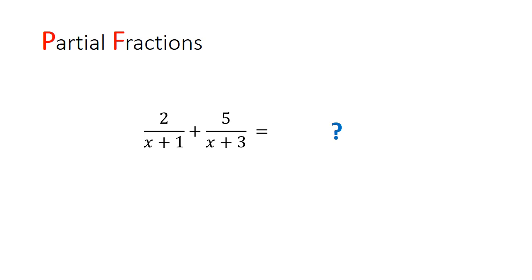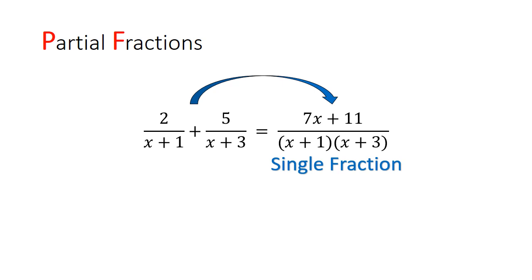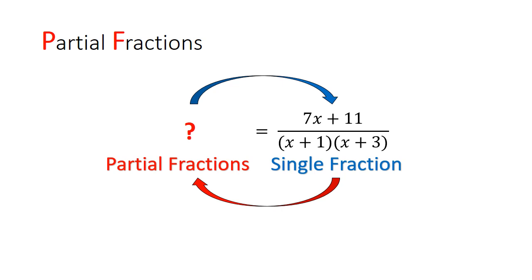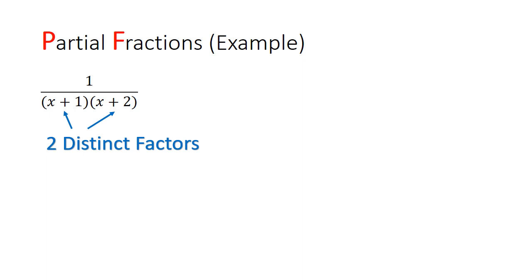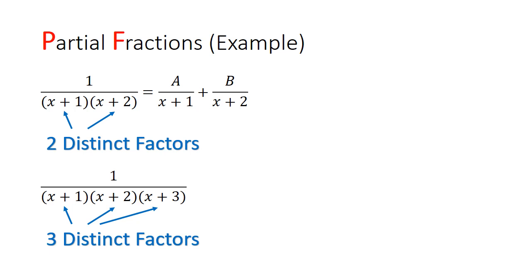Let's do a quick recap of partial fractions. Normally we start with two partial fractions and add them to get a single fraction. In partial fractions, we reverse this: given a single fraction, we ask what two partial fractions were added to produce it. If a fraction has two distinct factors, say (x+1) and (x+2), we re-express it as a/(x+1) + b/(x+2), where a and b are constants. If it has three distinct factors, we use a/(x+1) + b/(x+2) + c/(x+3). We determine the constants by combining the fractions under a common denominator and comparing numerators.